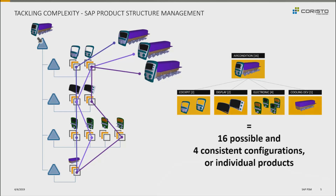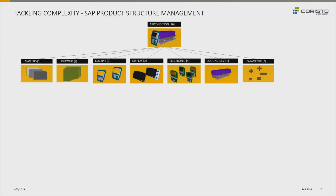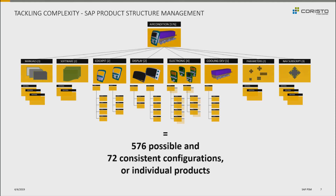However, as we'll see in the system, it's really not that simple, not even in this example, because we also have software, parameters for the software, manuals, and services that also belong to the product structure. So we already have 576 possible and 72 consistent configurations in this incredibly simplified structure.